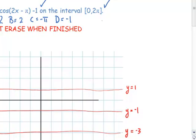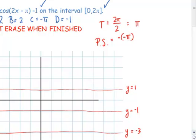Now we need to figure out what our period is. Remember, our period is equal to 2 pi divided by our frequency value, which was the b value, which is 2. This means that our period is equal to pi. And our phase shift, which is the amount our function starts at, is equal to the negative of our phase angle, which is negative c, divided by our frequency value, which was equal to 2. So our phase shift value is actually pi over 2.